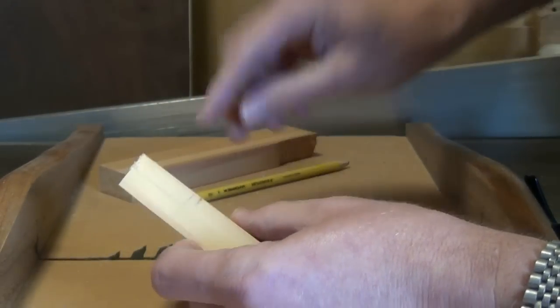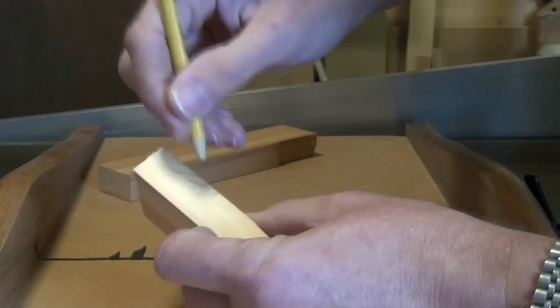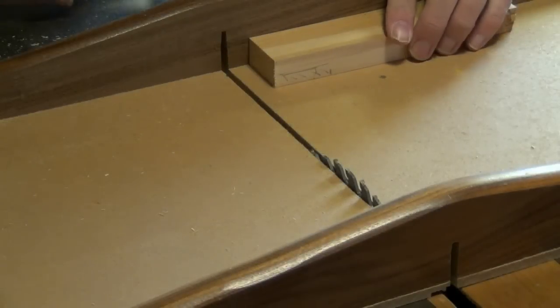And now I can go ahead and remove all this material just by running across the blade on the table saw. Remember, don't change the height.